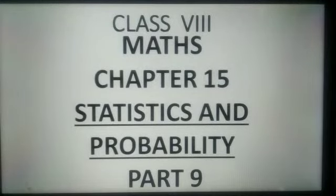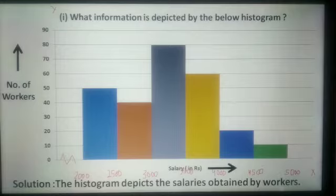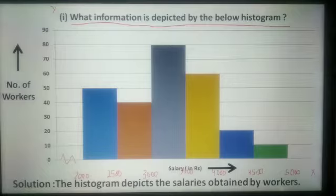Hello students, today we will continue chapter statistics and probability. Now look at this example, here a histogram is given and we have to answer some questions. In the first question, what information is depicted by the histogram? When we see this histogram, on the x-axis we have salaries in rupees, on the y-axis we have number of workers. So the histogram depicts the salaries obtained by workers.